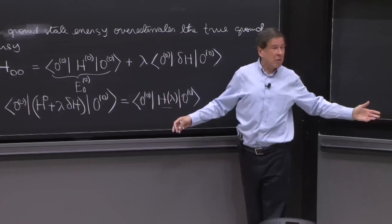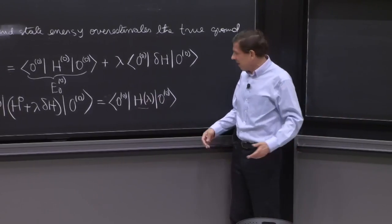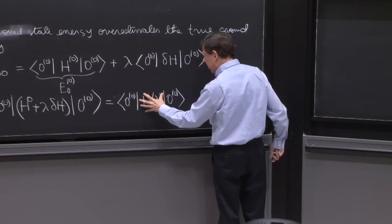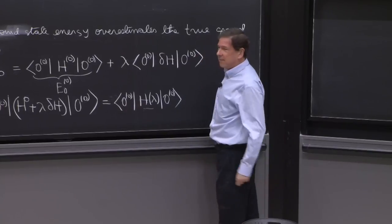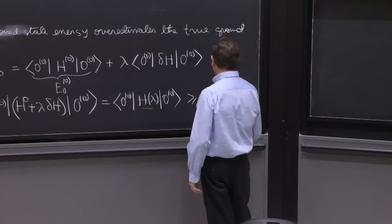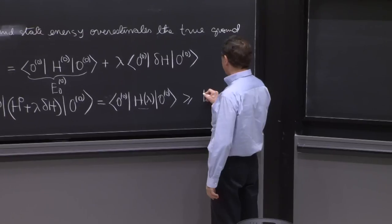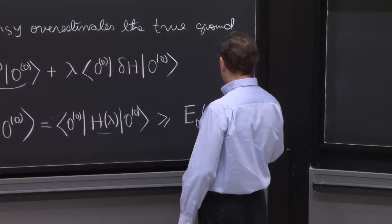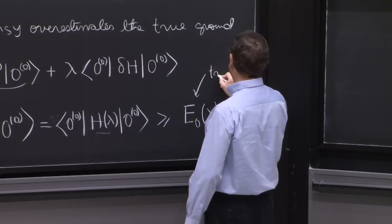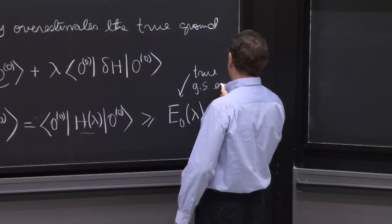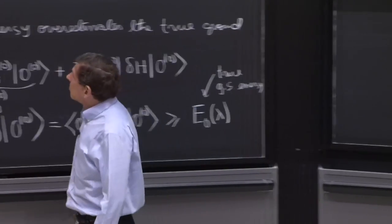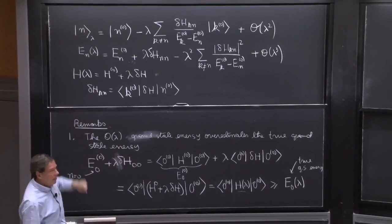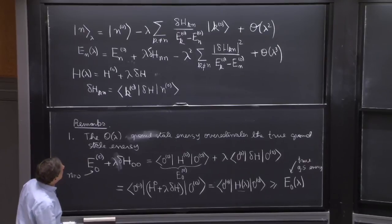And now comes the variational principle that says that if you evaluate the Hamiltonian on an arbitrary state, the expectation value of the Hamiltonian on an arbitrary state, you get more energy than the ground state energy of the system. You always get more, and when you hit the ground state, you get the lowest value. This is the Hamiltonian, and this is the unperturbed ground state. This is not the real ground state.